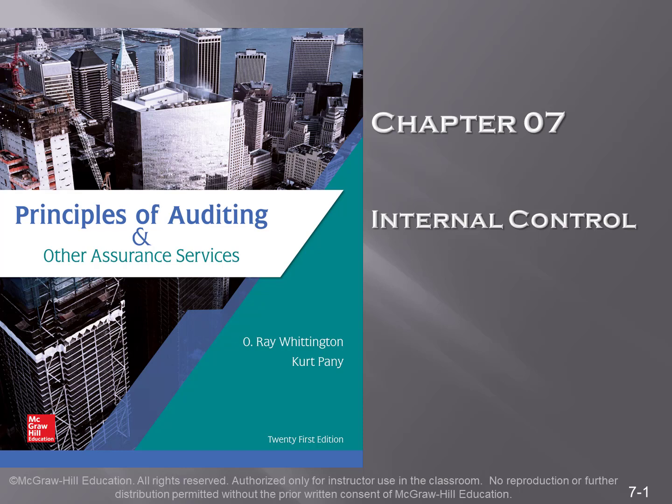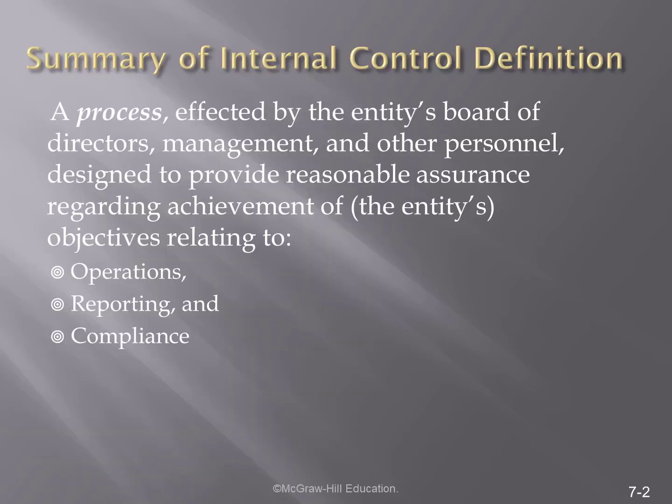If we go back to the audit risk model, part of the risk of material misstatement is based upon the control risk. As we are assessing the control risk, our primary focus is to identify specific internal controls established by management to mitigate the inherent risk that we see. It is through this assessment of internal controls that we are able to assess the control risk. Therefore, this chapter focuses primarily on the internal controls that management needs to have in place as they are establishing processes within the organization.